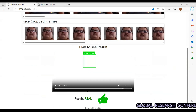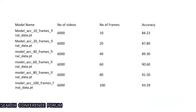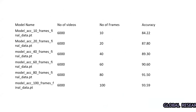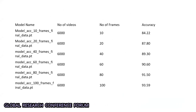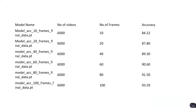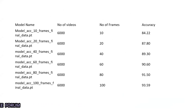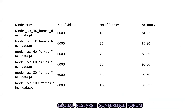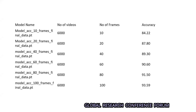The model was trained on 6,000 videos with 10 frames, achieving an accuracy of 84%. In the real world, the average deepfake video detection rate is above 60%, but our trained model achieved approximately 84% accuracy. We also tested with different numbers of frames — 20, 40, 60, 80, and 100 frames — and obtained different accuracy levels for each.